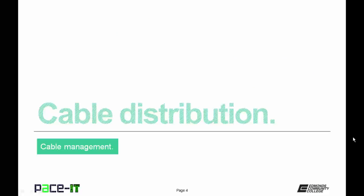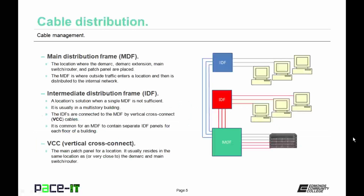I'm going to begin by talking about cable distribution, and the first item under cable distribution is the main distribution frame, or MDF. This is the location where the DMARC, DMARC extension, main switch or router, and patch panel are placed. The MDF is where outside traffic enters a location and is then distributed to the internal network.